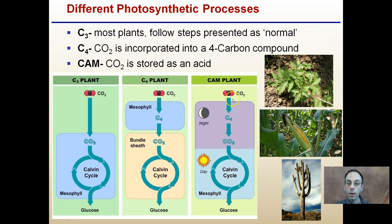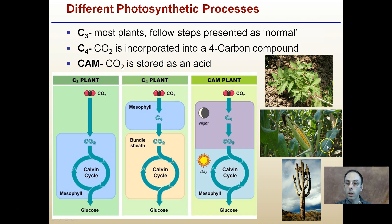In the CAM pathway, carbon dioxide is stored as an acid at night and then fed through the Calvin cycle during the day, with the Calvin cycle occurring in the mesophyll. Examples: C3 plants would be a tomato plant, C4 plants would be like corn, and CAM plants would be a cactus.